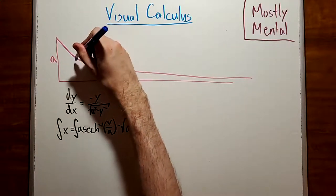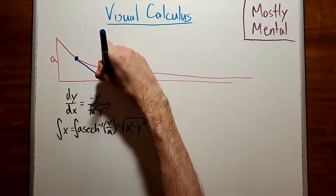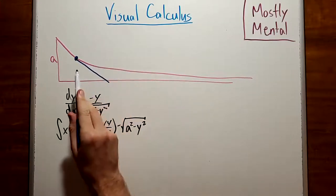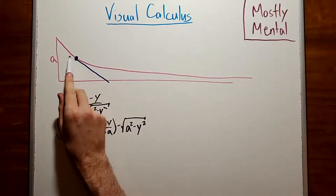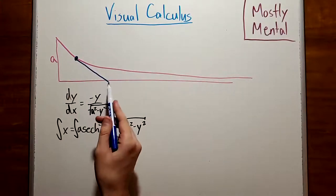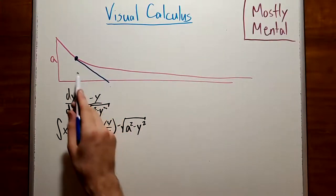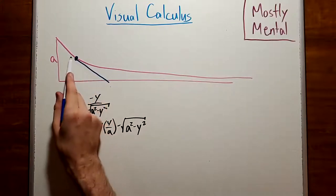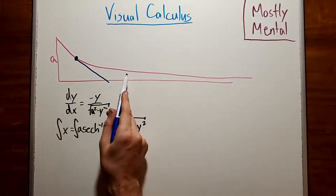Thankfully, there's an easier way to get there. If we draw in the string at some moment in time, then notice that the toy is moving in the direction of the string. After all, it's being pulled. And so this segment must be tangent to the curve.